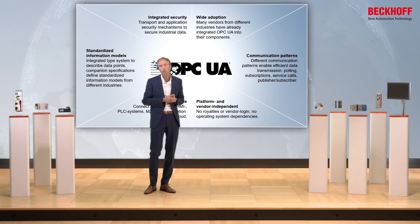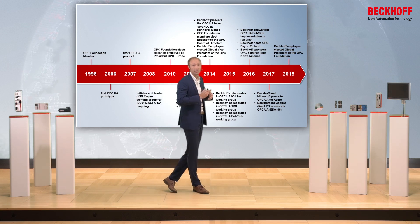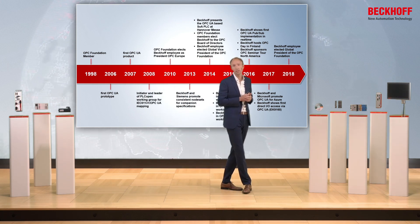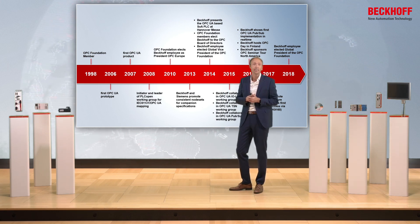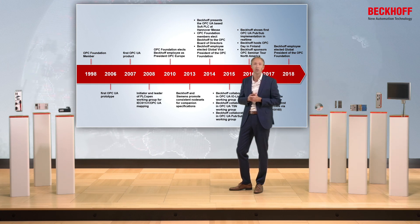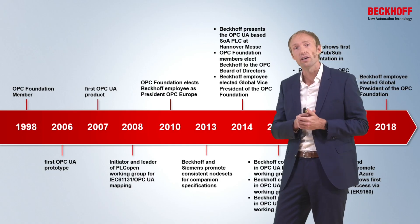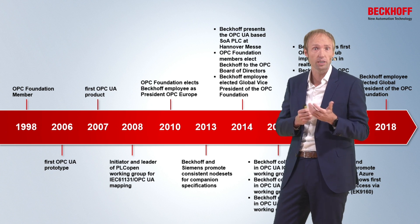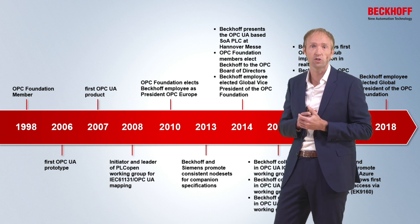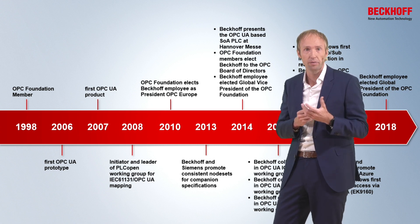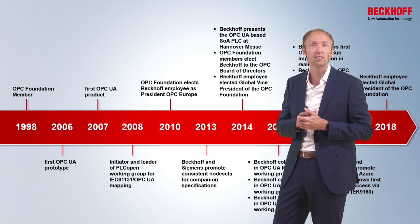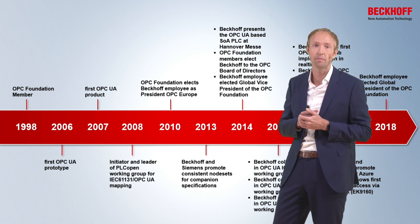Let's have a look at our history with OPC UA as a technology and the OPC Foundation in general. Everything started in 1998 when Beckhoff became a member of the OPC Foundation and released its first OPC-related product — the COM-based TwinCAT OPC DA server. A few years later, in 2006, OPC UA was introduced and the first version of the OPC UA specification was released. In the same year, Beckhoff announced and promoted an OPC UA server prototype which enabled access to variables from the TwinCAT real-time via OPC UA.